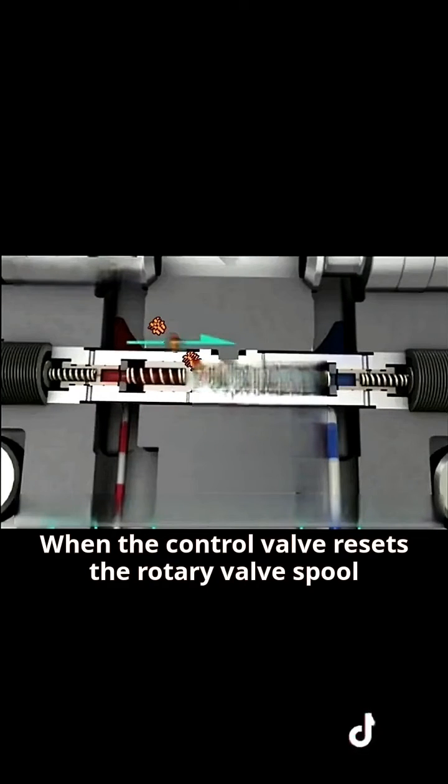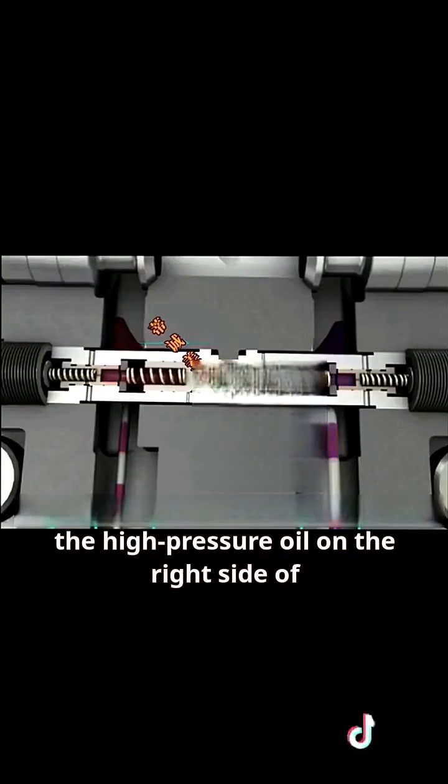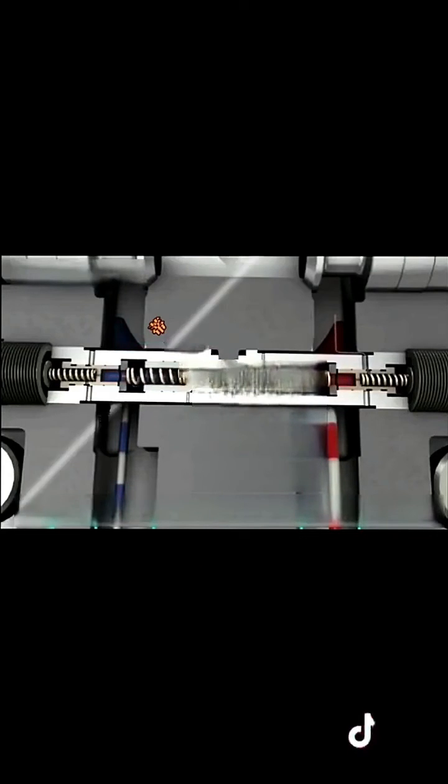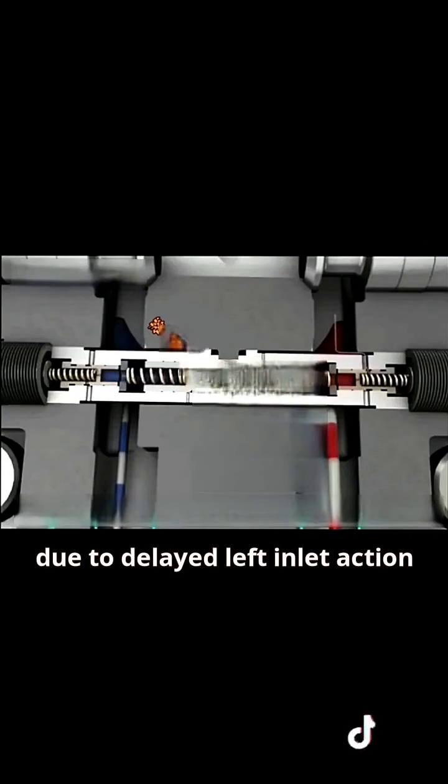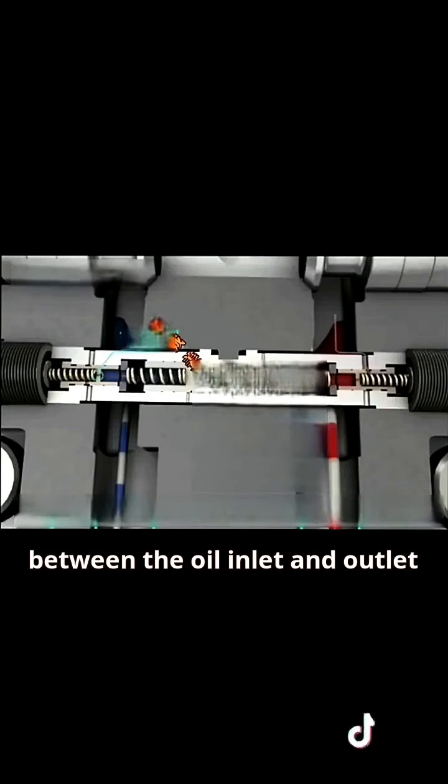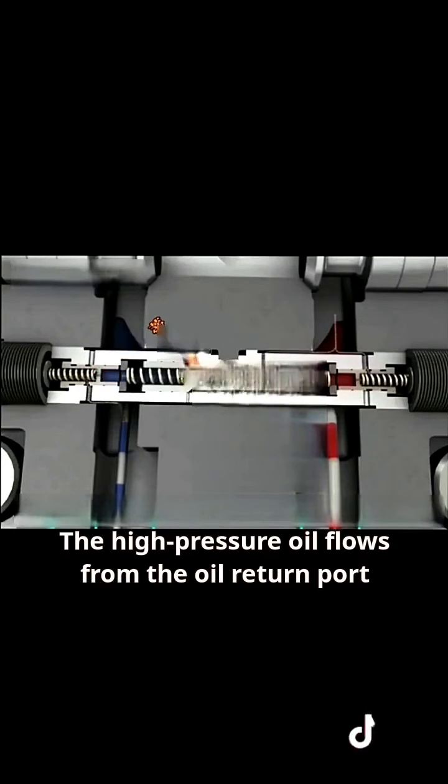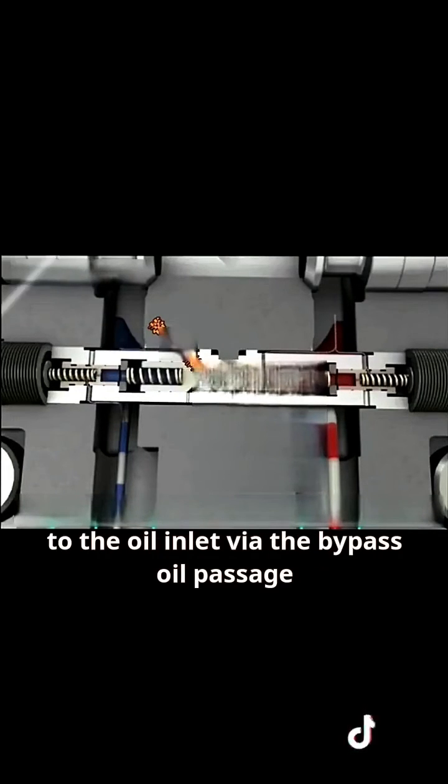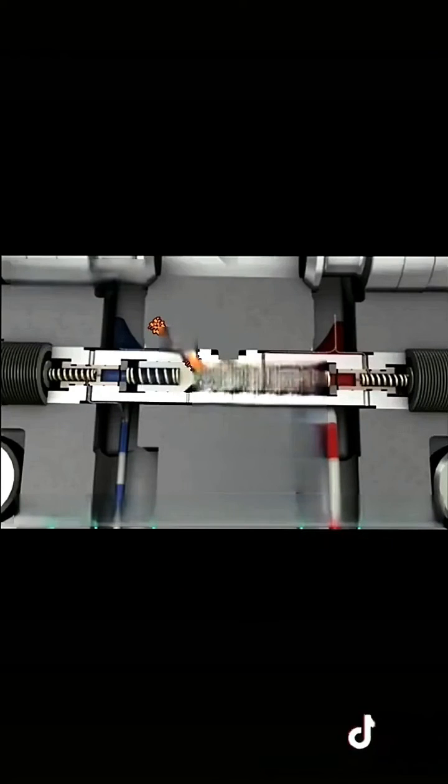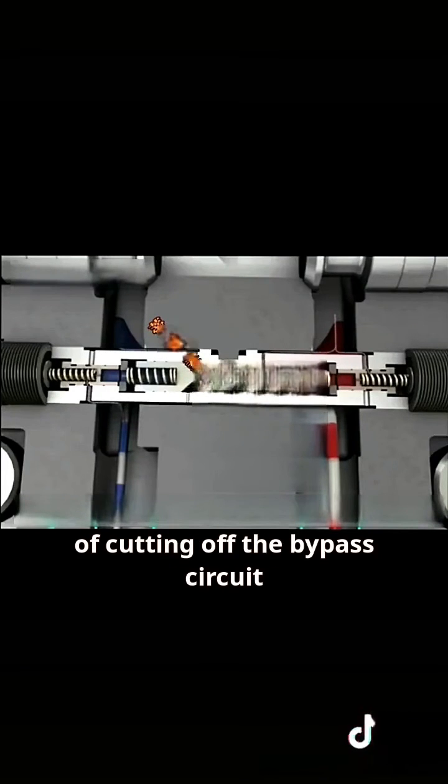When the control valve resets the rotary valve spool, the high pressure oil on the right side of the actuation head pushes it to the left. However, due to delayed left inlet action, a bypass oil circuit is formed between the oil inlet and outlet. The high pressure oil flows from the oil return port to the oil inlet via the bypass oil passage, until the lifting head reaches the position of cutting off the bypass circuit.